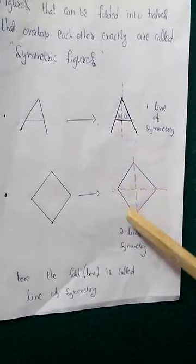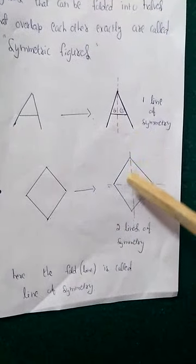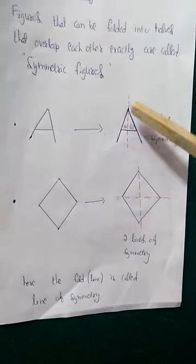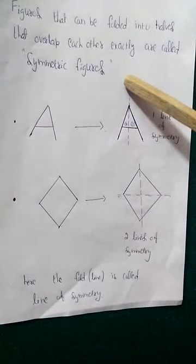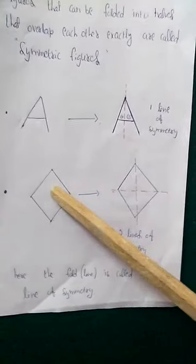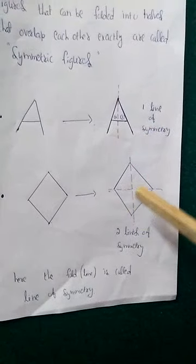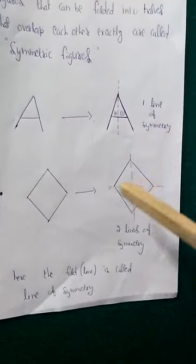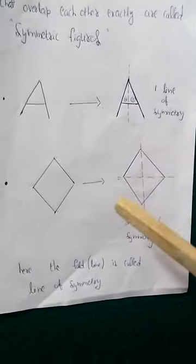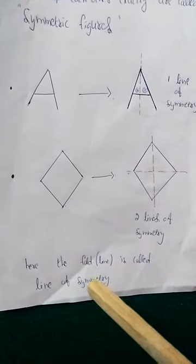This figure has two lines of symmetry — one horizontal line and one vertical line. For letter A, there was only one line of symmetry. For this figure, there are two lines. So the line of symmetry may be one or more than one. The fold line is called the line of symmetry.